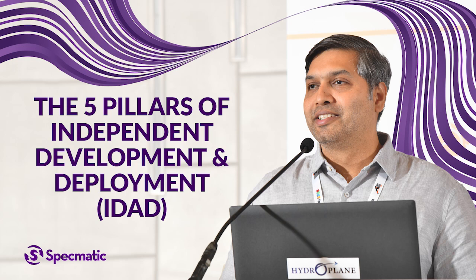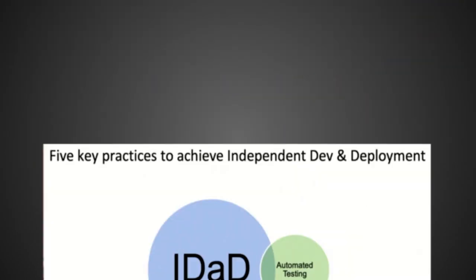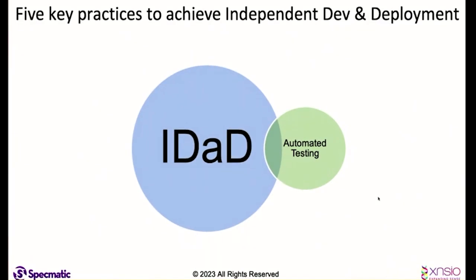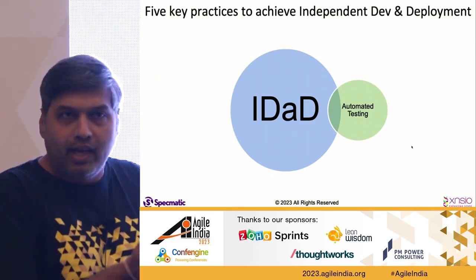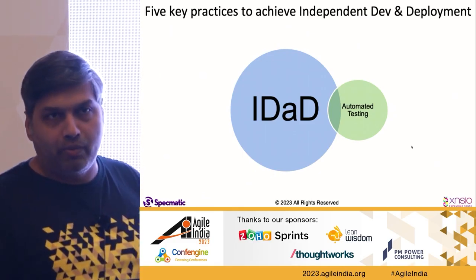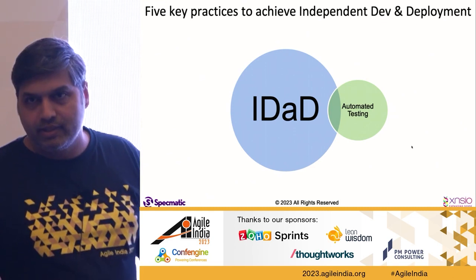I'm going to introduce five key practices that I believe are critical for IDAD, which is independent development and deployment. The first one is automated testing. That's pretty straightforward — everyone understands that if you want to deploy very frequently, you need to have automated tests.